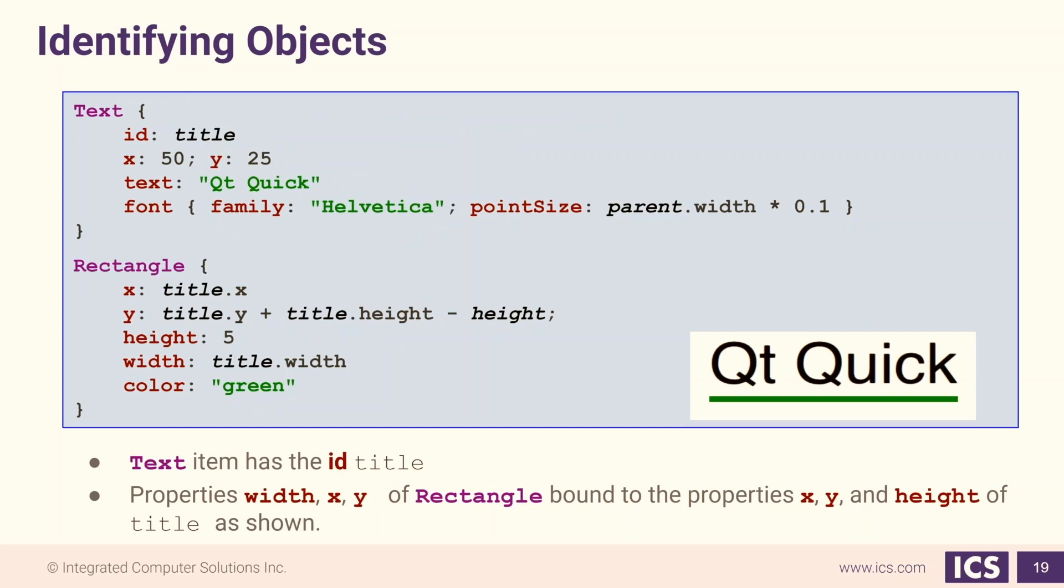One very useful property to set is ID. This allows us to get a reference to the object that we can use later, usually to access the object's properties. We don't have to set an ID for every object. We only really need to set IDs for those objects that we want to access from a non-child object.